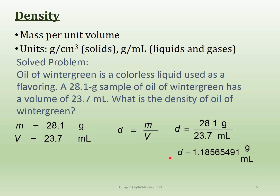Once you get the answer, round it off. Count from the left to three significant figures: 1.18 is secure, and since the next digit is 5 or more, round up. So the final answer is 1.19 grams per milliliter — that's your density calculation result.